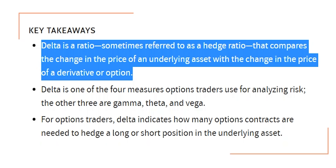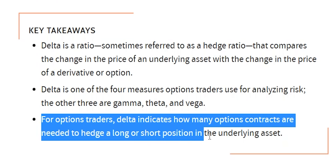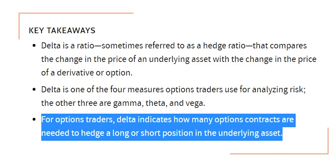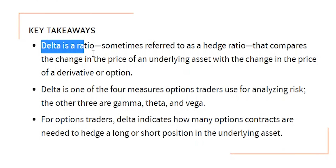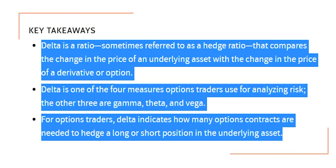From Investopedia: Delta is a ratio, sometimes referred to as a hedge ratio, that compares the change in the price of an underlying asset with the change in the price of a derivative or option. Delta is one of four measures options traders use for analyzing risk — the other three are Gamma, Theta, and Vega. For option traders, Delta indicates how many option contracts are needed to hedge a long or short position in the underlying asset. That definition looks a bit complicated, but it really is not.